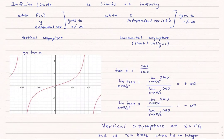Let's look at an example we reviewed when talking about infinite limits: y equals tangent of x. We rewrote tangent of x as sine x over cosine x, and looking at the limit as x approaches pi over 2 from both sides, using the quotient property for limits, we found that it went to positive and negative infinity — therefore there was a vertical asymptote at x equals pi over 2.